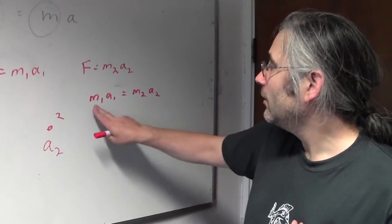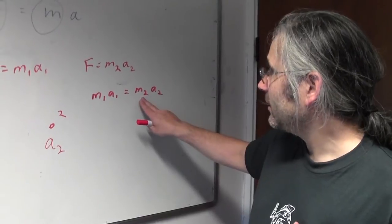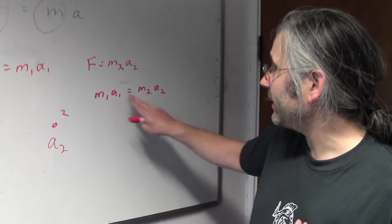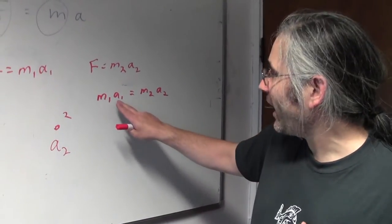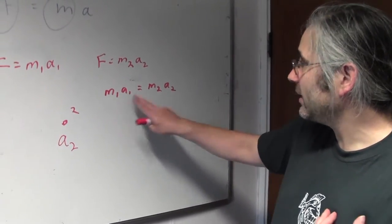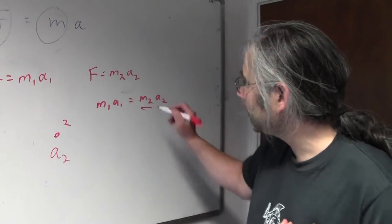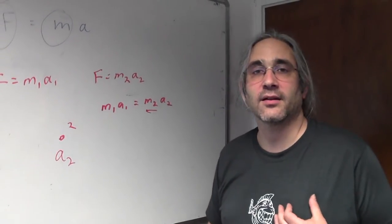It's a ratio associated with objects to do with how they accelerate. So if you had a sample mass and it accelerates one way due to another object accelerating another way, you can calculate what the mass of that second object is.